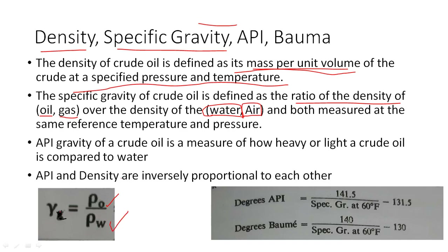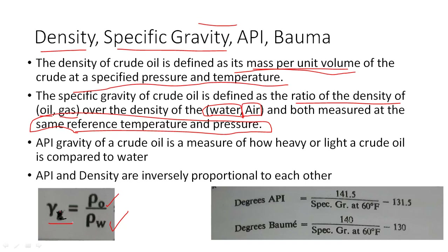Both the density of oil and the density of water must be measured at the same reference pressure and temperature. If you measure oil density at a different temperature from water density, your specific gravity calculation will not be correct.